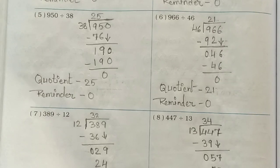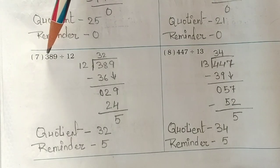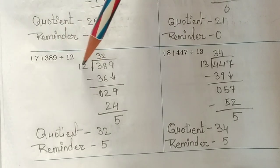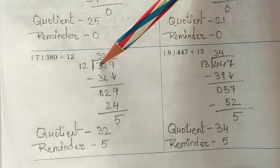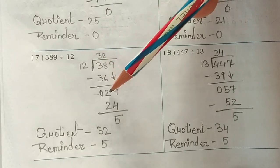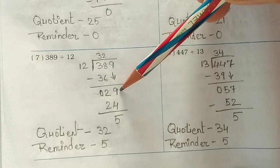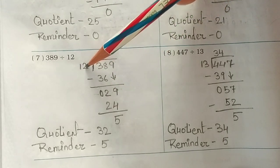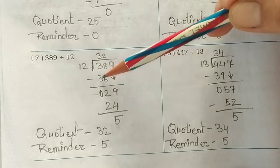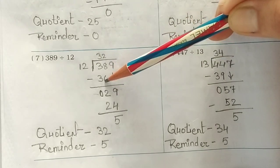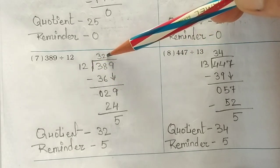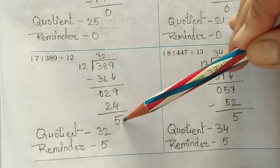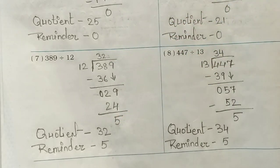Seventh number: 389 divided by 12. 12 threes are 36 — subtract from 38 and you get 2. Bring down the 9 to get 29. 12 twos are 24, and 12 threes are 36 which is too large, so we take twos. Write 2 here — 12 twos are 24, remainder is 5. So 32 is your answer and 5 is your remainder.